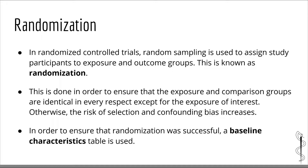So far we have talked about probability sampling, representativeness, and how they help reduce the risk of selection bias. There is another random sampling technique used in randomized controlled trials that also minimizes the risk of selection bias. In randomized controlled trials, random sampling is used to assign study participants to exposure and comparison groups — this is known as randomization. This is done to ensure that the exposure and comparison groups are identical in every respect except for the exposure of interest; otherwise, the risk of selection bias and confounding bias increases.